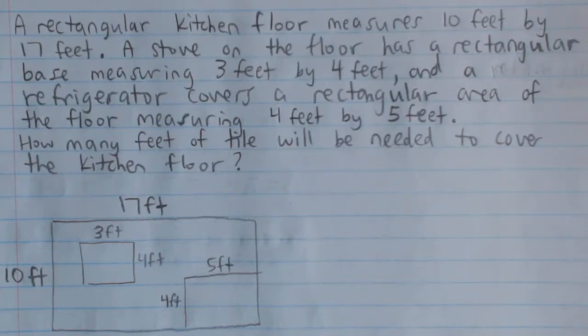A rectangular kitchen floor measures 10 feet by 17 feet. A stove on the floor has a rectangular base measuring 3 feet by 4 feet, and a refrigerator covers a rectangular area of the floor measuring 4 feet by 5 feet.